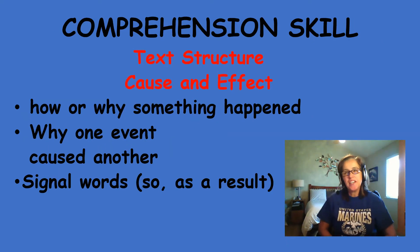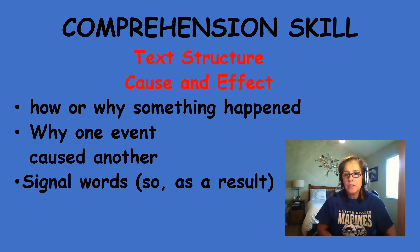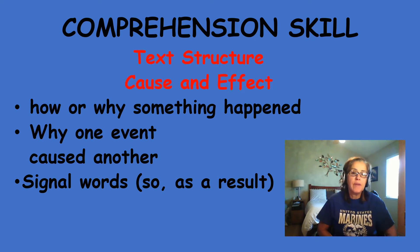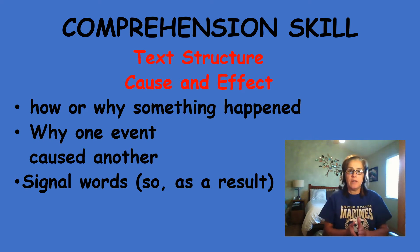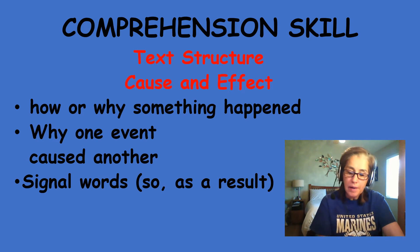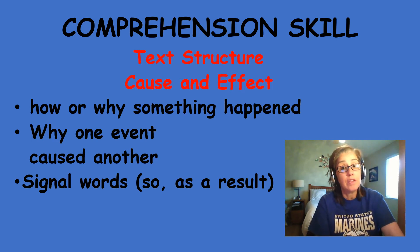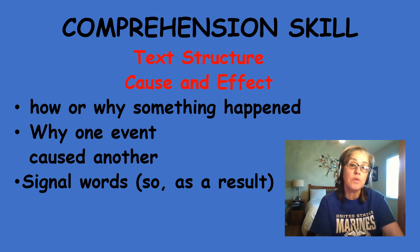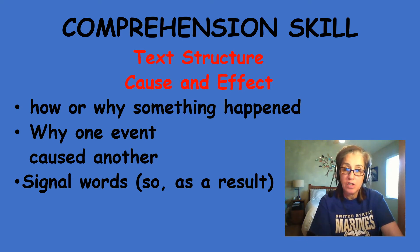This week's comprehension skill, as well as next week's, is text structure with a focus on cause and effect. It's going to explain how or why something happened — the why, which would be the event, and what caused that event to happen. There are specific signal words you'll find with cause and effect, such as 'so' or 'as a result.' Authors of narrative nonfiction often describe historical occurrences by explaining how some events caused others to happen.